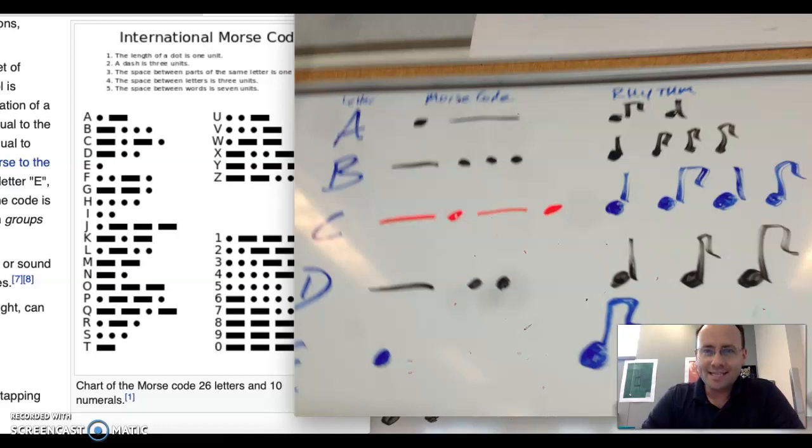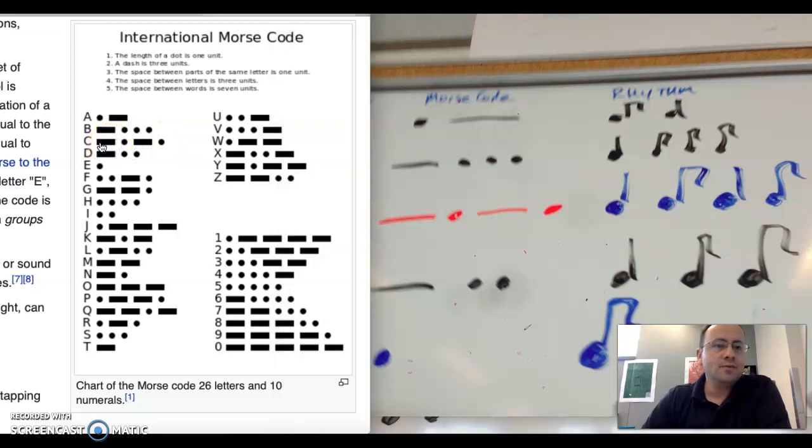Let's look at putting the letter C into Morse code rhythms. The letter C in Morse code is long, short, long, short.